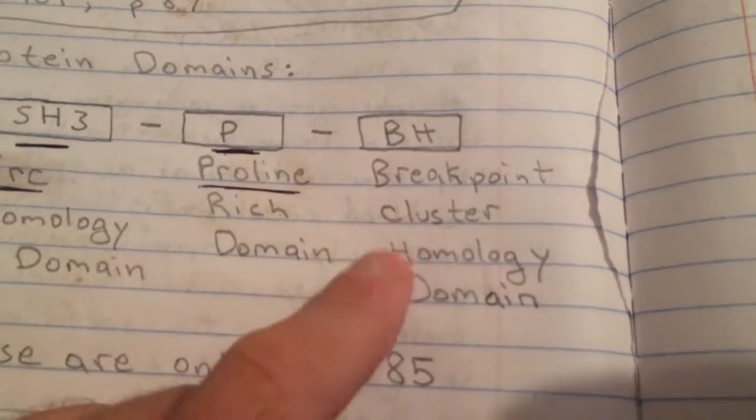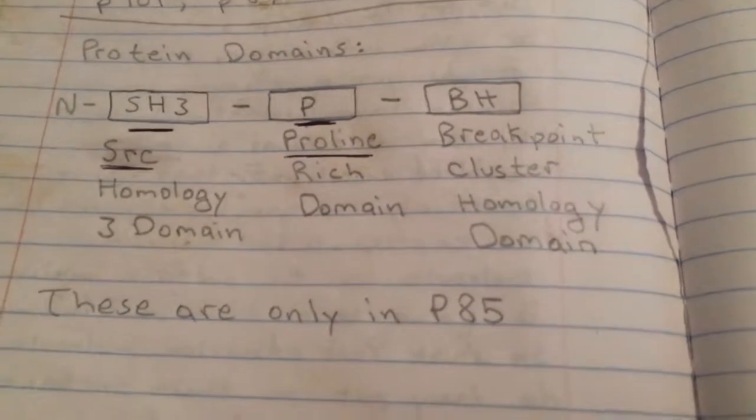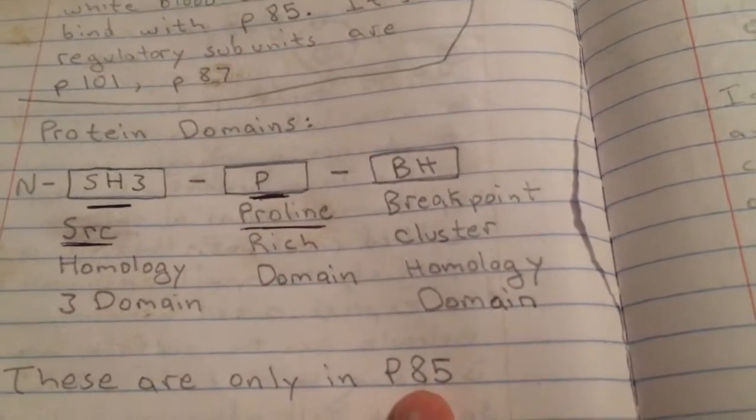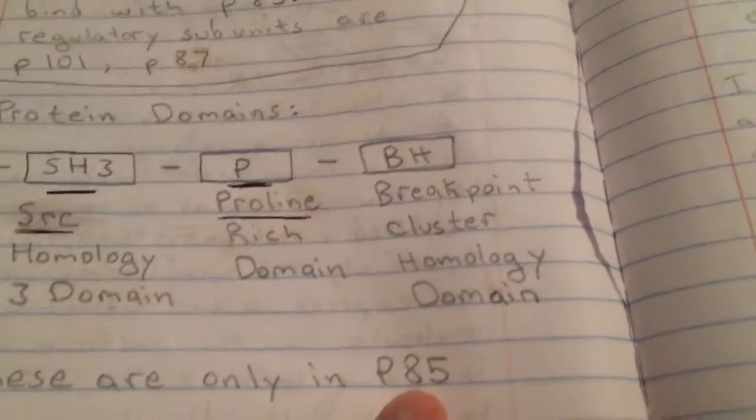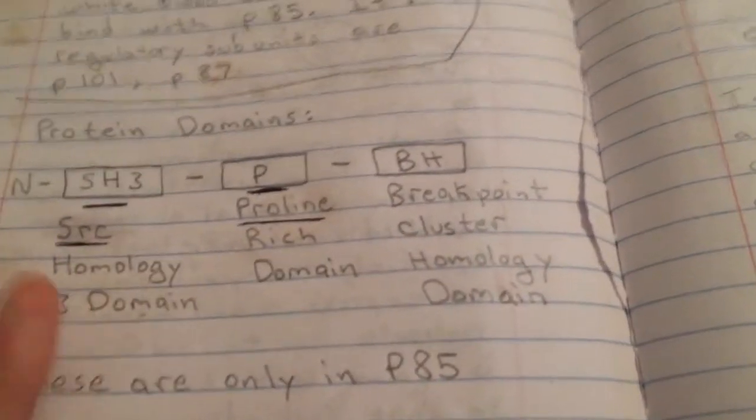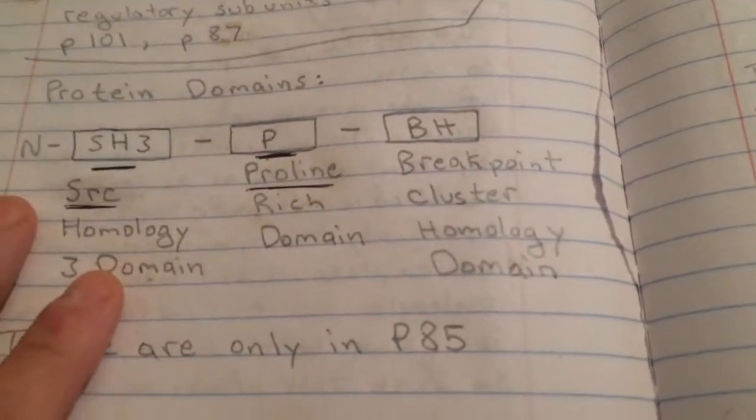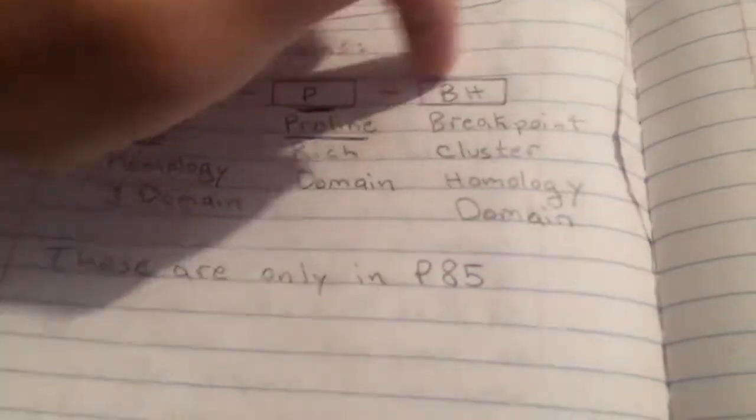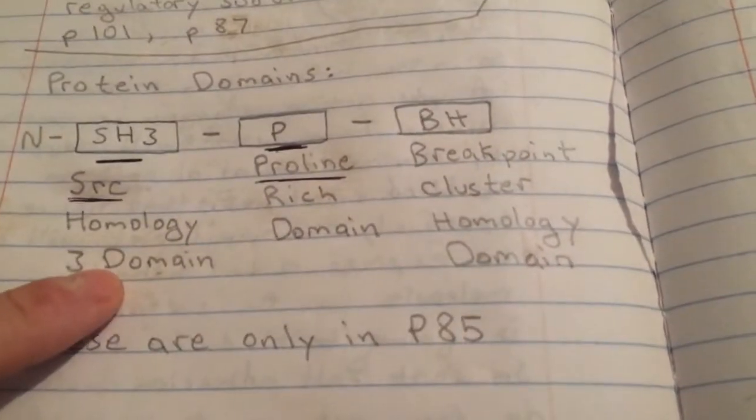So right here we have the amino terminus, then we have a SRC homology 3 domain. Next to it we have the proline-rich domain, and that's no mistake. Within this one regulatory protein, they are next to each other and that's not by mistake. Next we have breakpoint cluster homology domain, which you don't need to worry about right now for this video. But these are only in the P85.